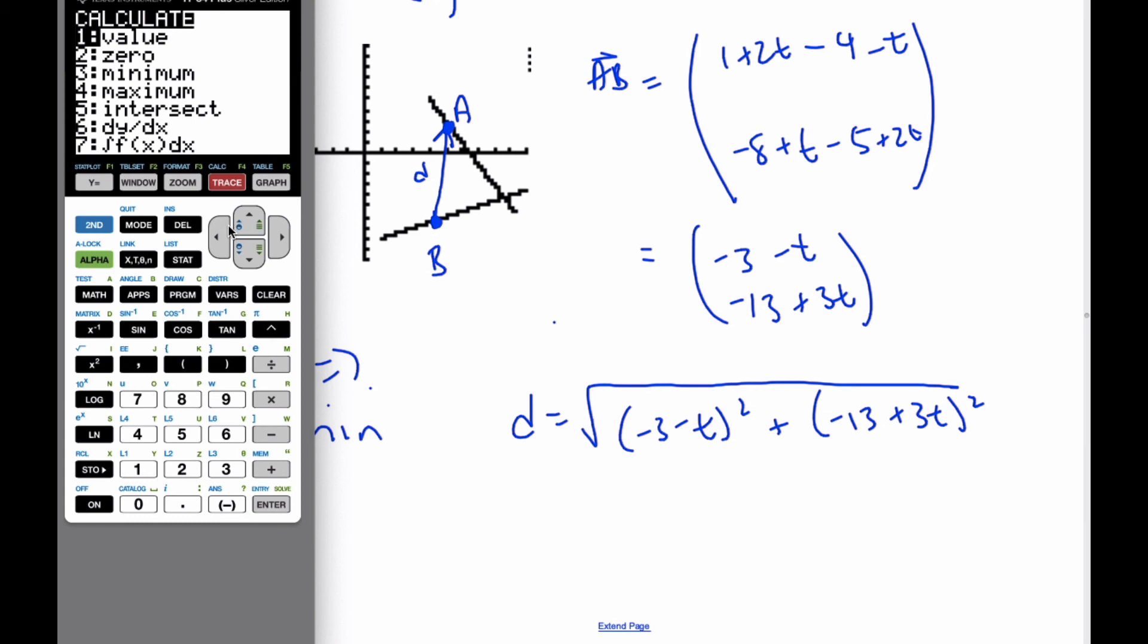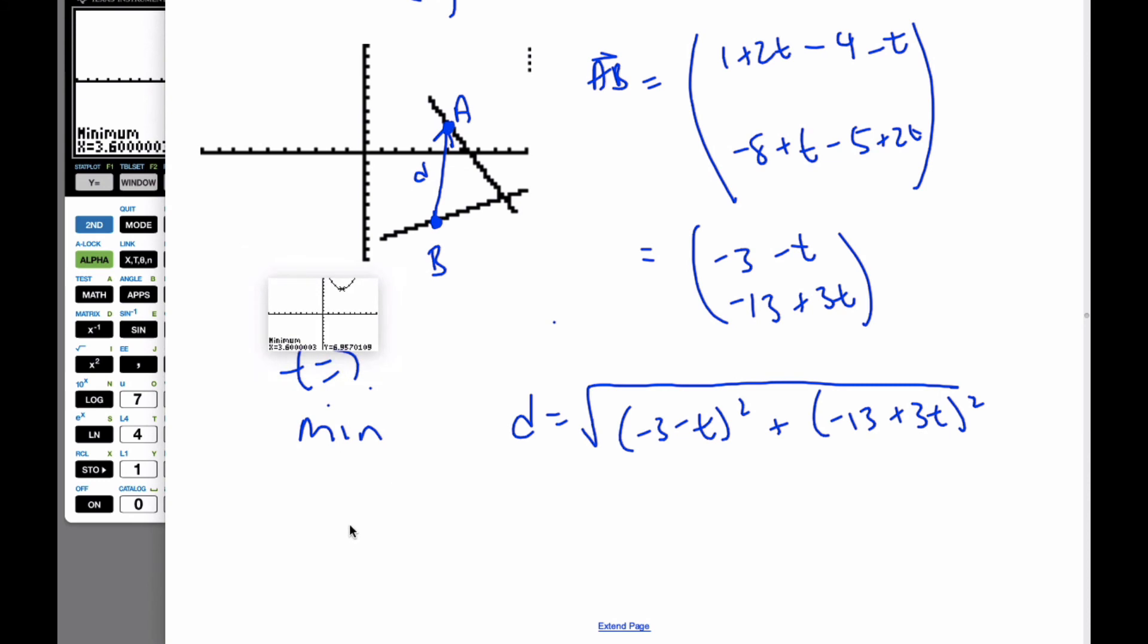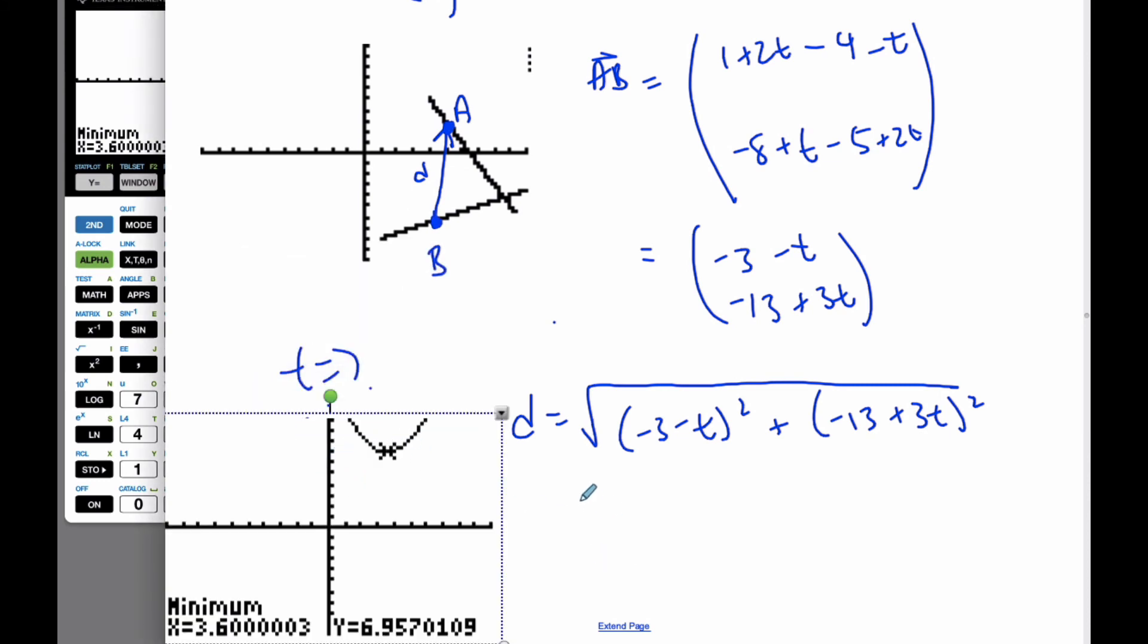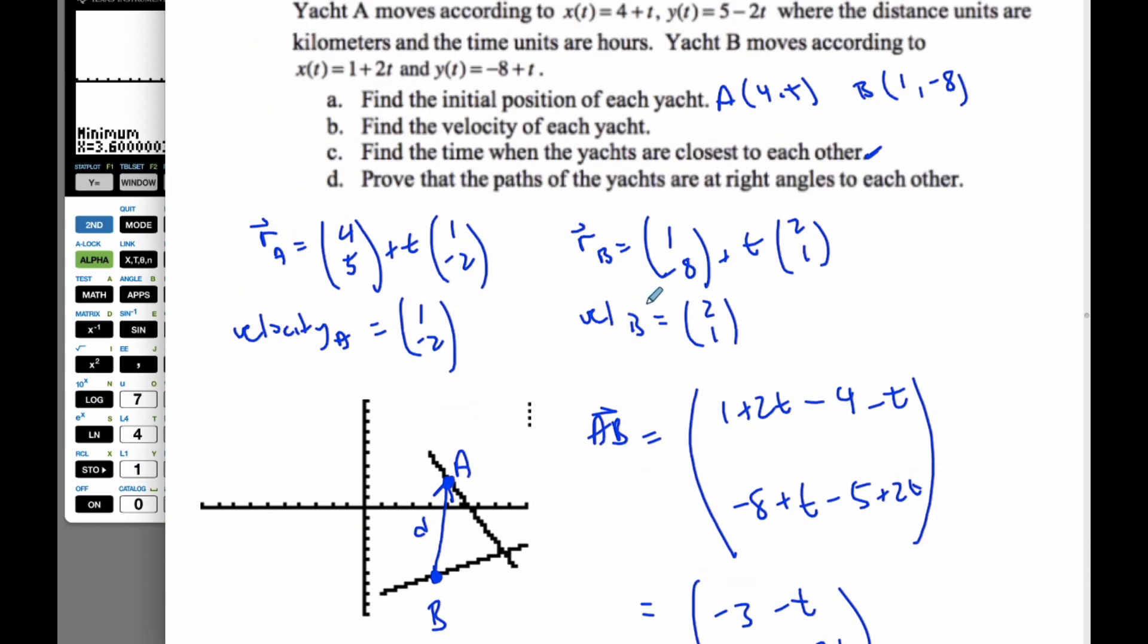So I'm going to trace that. I want 3. I'll make that 0 to 6, and guess a 3. And I can see here from the graph that D is equal to 6.957, but more importantly, the time is equal to 3.6. And so 3.6 hours from their initial start is when they are at a minimum closest to each other.